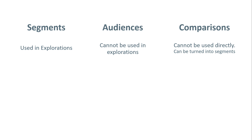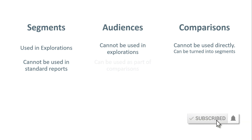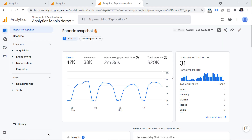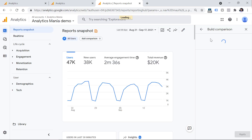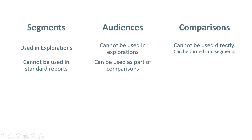Segments cannot be used in standard reports — they are only available in explorations. Audiences can be used in standard reports if you use them in comparisons: click Add Comparison, include the dimension Audience Name, and add the audience. And obviously, comparisons are used primarily in standard reports.